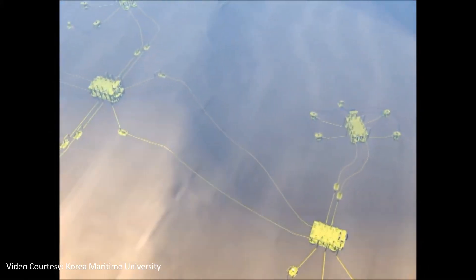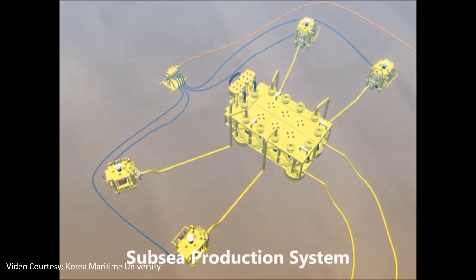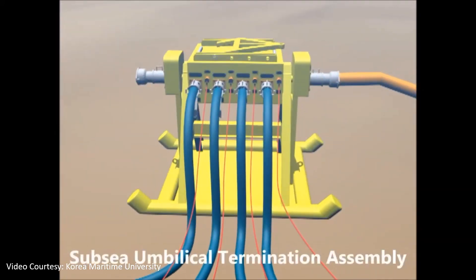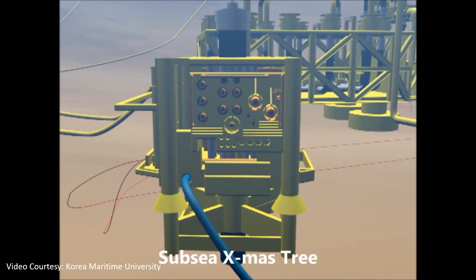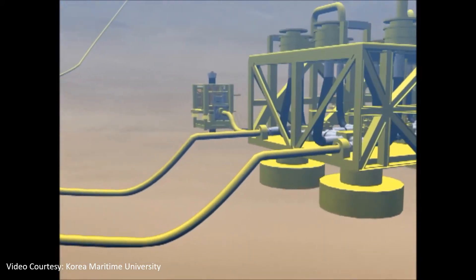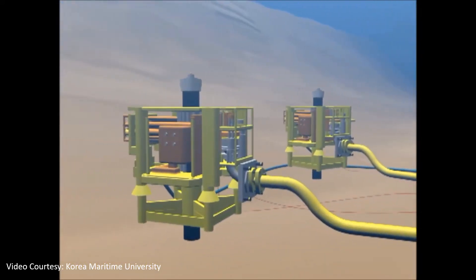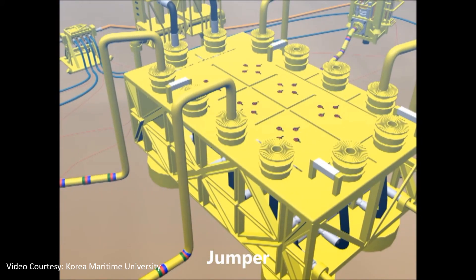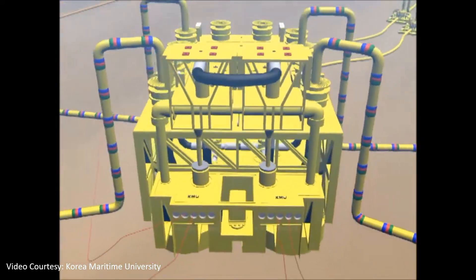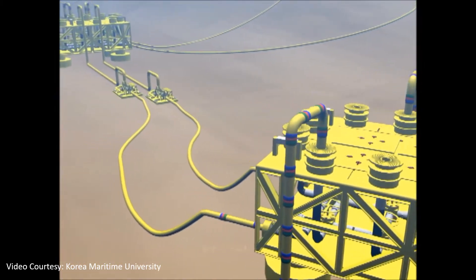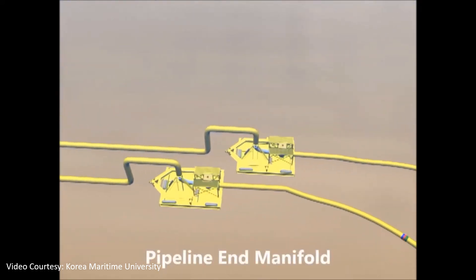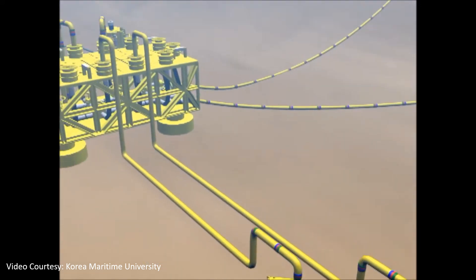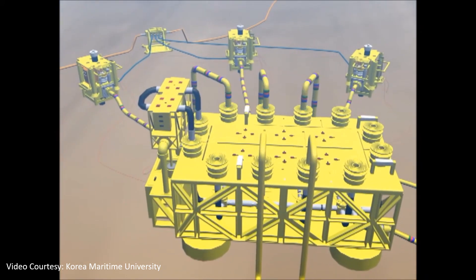Case study of a subsea production system. One can refer to the architecture diagram where the subsea production system is shown connected to the subsea umbilical termination assembly. The subsea Christmas tree is shown, and from the well side, jumpers are placed to connect the flow lines to the subsea manifold. Various flexible lines are connected through jumpers to the subsea manifold and the pipeline end manifold (PEM).